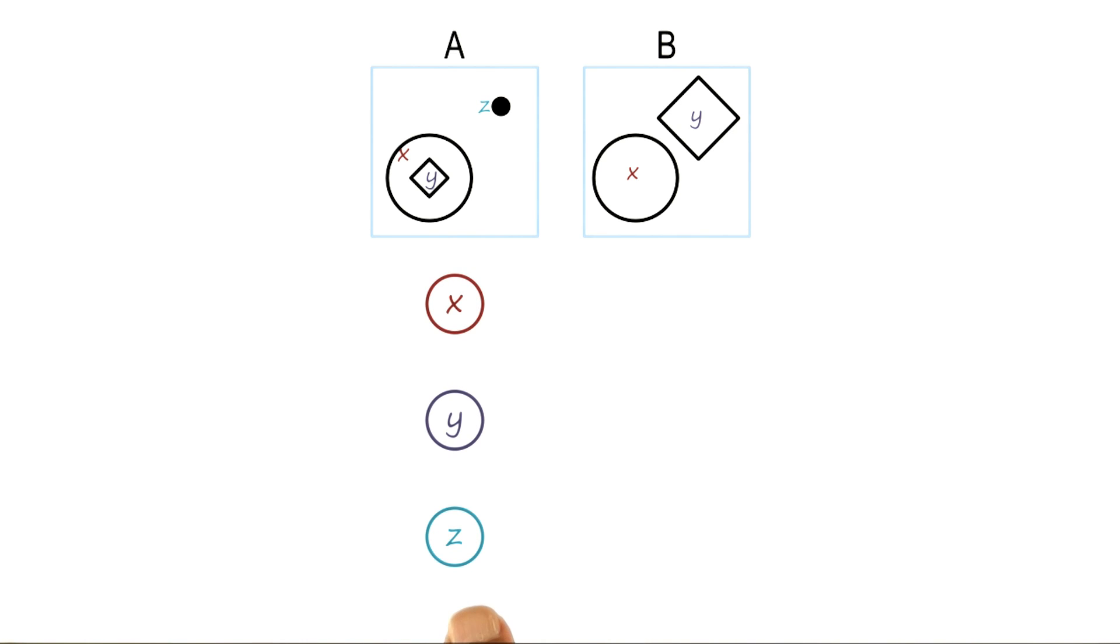So the first thing we need to do in order to build a semantic network for representing our knowledge of A is to represent the objects. So I have the object X, the object Y, the object Z, standing for the circle, the diamond, and the black dot.